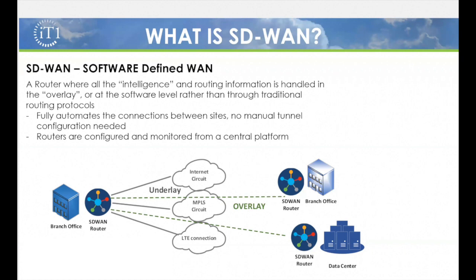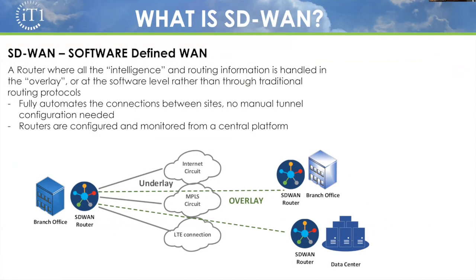The nice part about it is you can use really any circuit with an SD-WAN router — internet circuit, MPLS circuit, 4G or 5G backup. It doesn't really matter to the SD-WAN. It can route over any connection and establish tunnels over any connection in an automated fashion, whether that's internet, MPLS, or LTE — making established connections to all of your branch offices and data centers automatically.